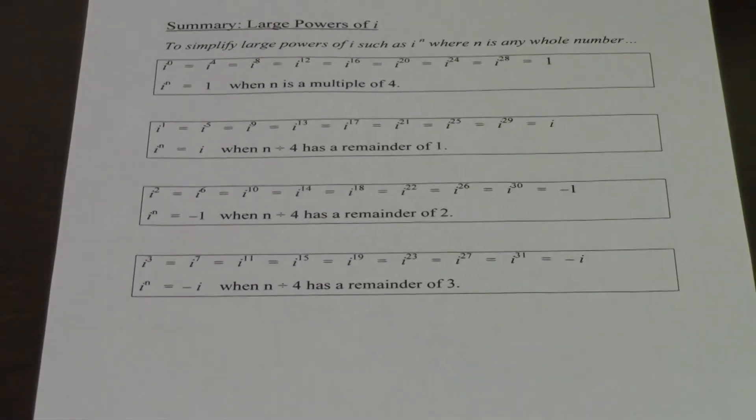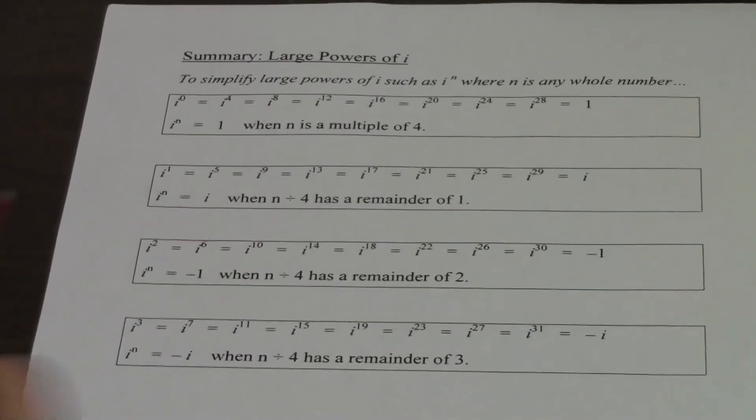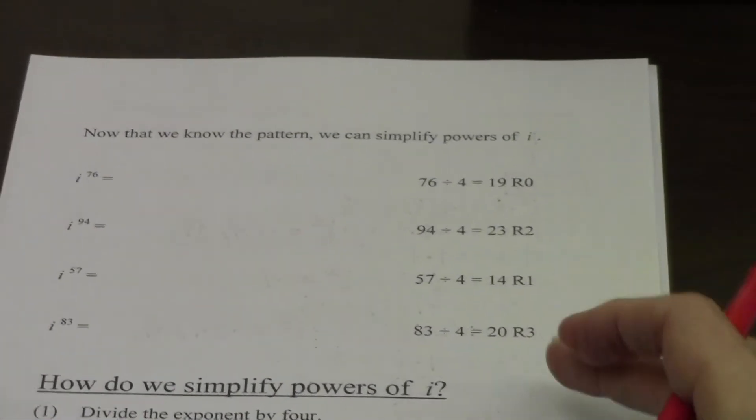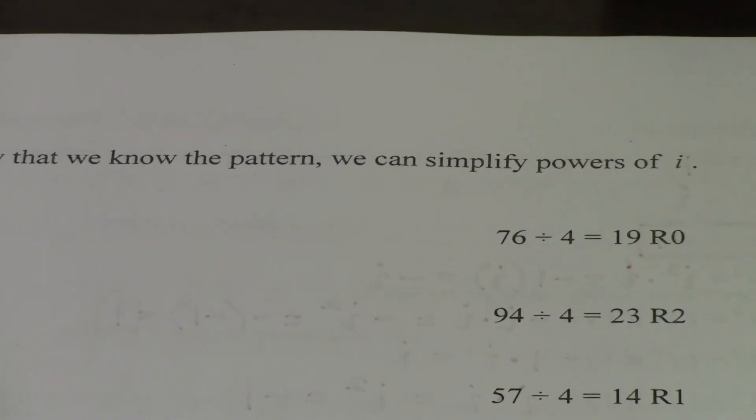Here's the summary for simplifying large powers of i: divide the exponent by four and keep the remainder — the remainder is really important, not the quotient. i to any whole-number power is the same as i to the remainder power. There are only four possible answers — one, i, negative one, and negative i — and they recycle. That's a really good pattern to know.